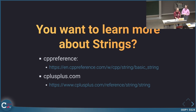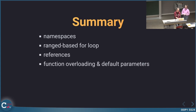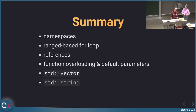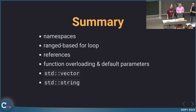We will shift the last topic to next Thursday. To conclude: today we covered namespaces, range-based loops, references, function overloading, default parameters, std::vector, and std::string. Next week we will dive into C++ classes and object-oriented programming. Thank you for being here — hopefully it was interesting for you. See you next week and have a nice evening.